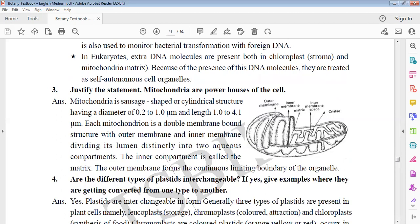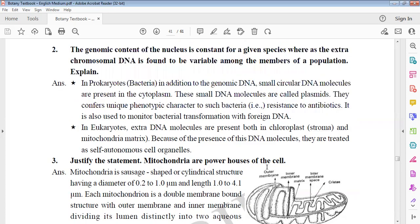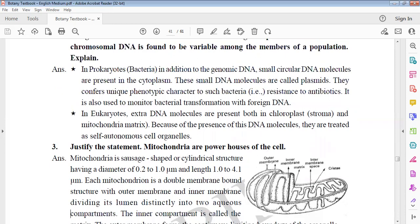Justify the statement mitochondria is the powerhouse of the cell. Mitochondria is double membrane-bounded and cylindrical, sausage-shaped. Diameter is 0.2 to 1 micrometers, 1 to 4 micrometers length. Mitochondria is double membrane-bounded - outer membrane and inner membrane. Outer membrane is porous, inner membrane is selectively permeable with infoldings called cristae, and in the enclosed aqueous medium is the matrix.